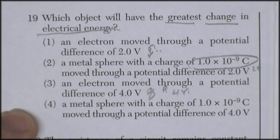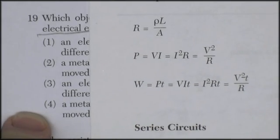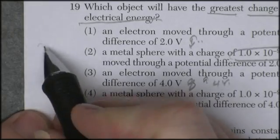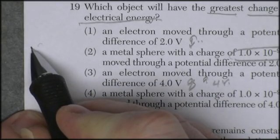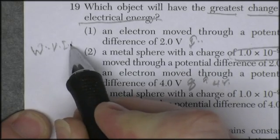Alright, let's see if we can't find something here. Current, I'm going to play with this. Now, my equation tells me that my energy is voltage times current times time.